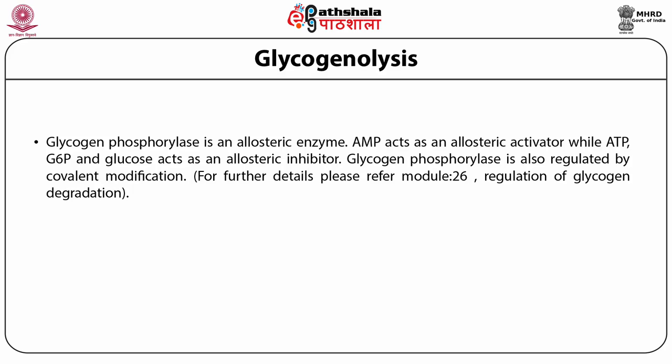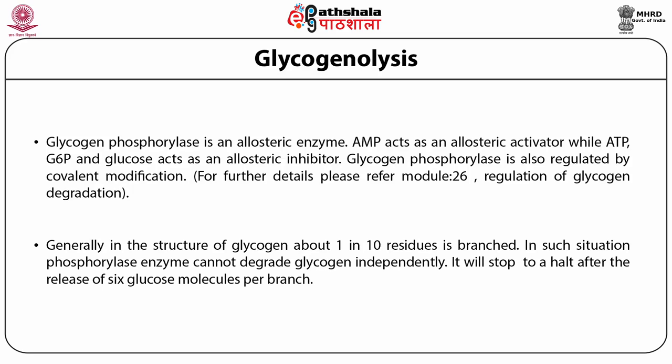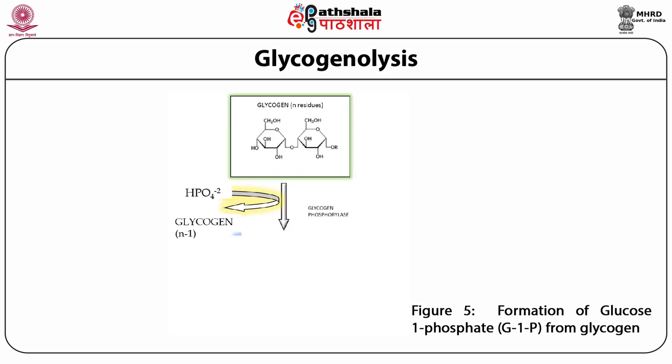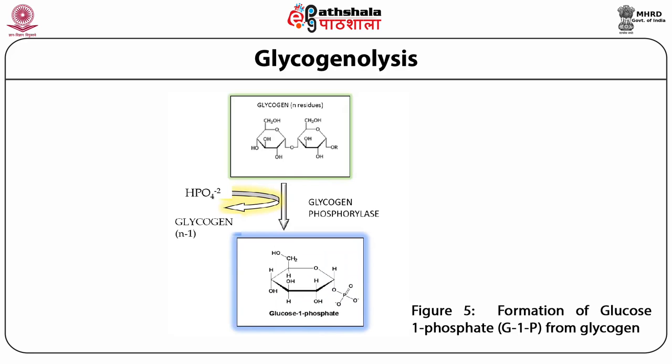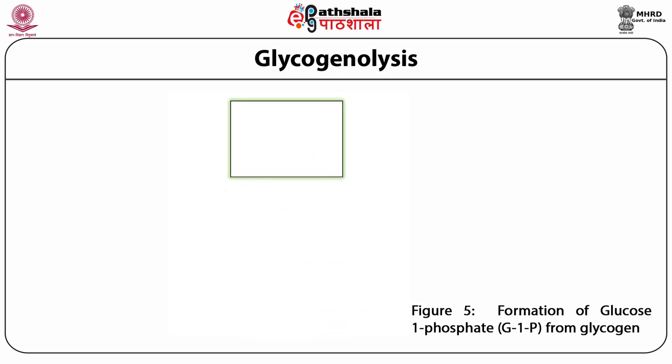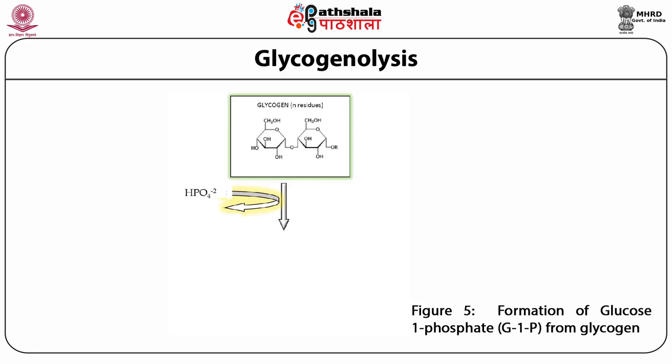For further detail on regulation, refer to module 26 of glycogen degradation. In the structure of glycogen, about 1 in 10 residues is branched. In such a situation, phosphorylase cannot degrade glycogen independently — it will halt after the release of about 6 glucose molecules per branch. This slide explains the formation of glucose 1-phosphate from glycogen via glycogen phosphorylase; after this reaction, one glucose molecule is released and the glycogen becomes N-1.